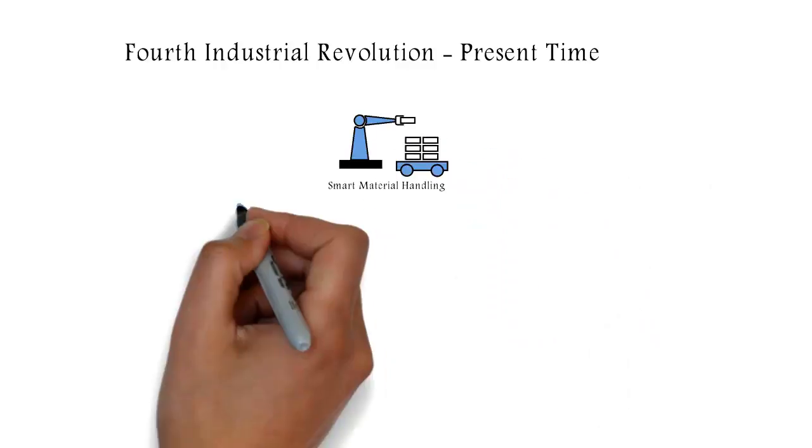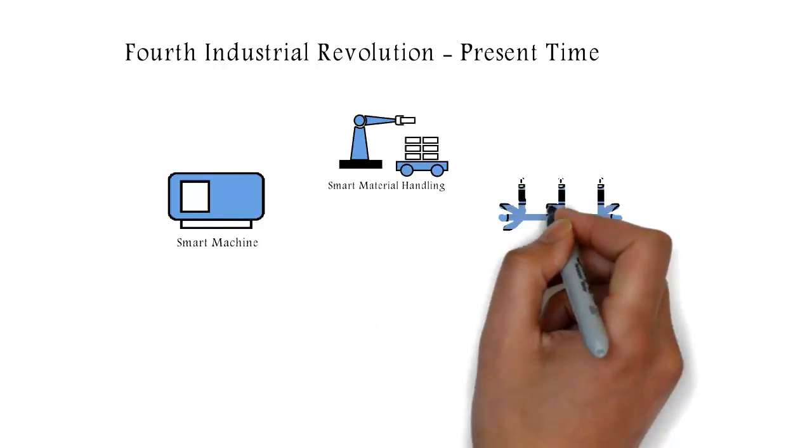The fourth industrial revolution encompasses smart material handling, smart machine, and smart material and process.